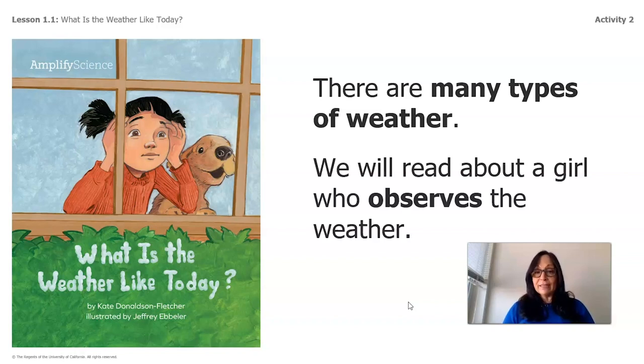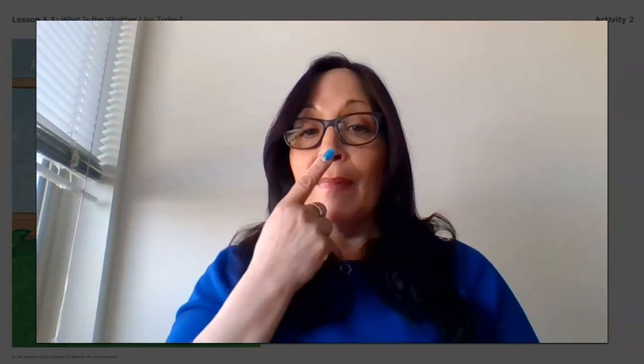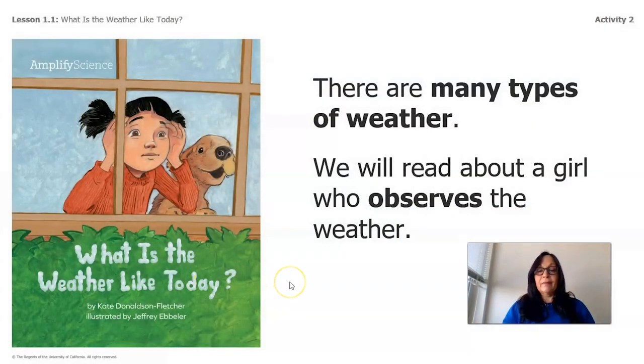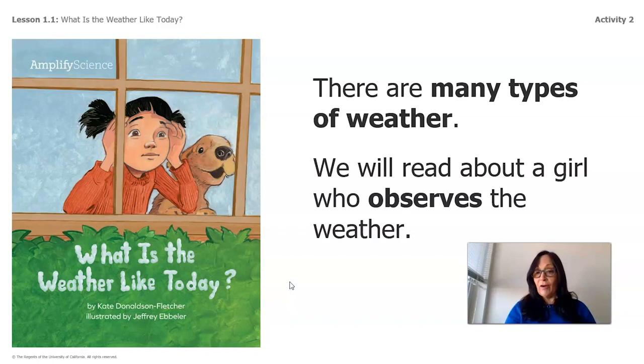If you notice, she is looking outside the window — she is observing. When you observe, we use our five senses: our sense of hearing, our sense of sight, our sense of smell, our sense of taste, and our sense of touch. She is looking outside, observing with her eyes — using the sense of sight.